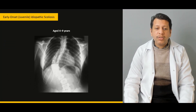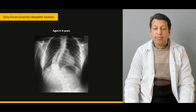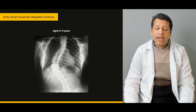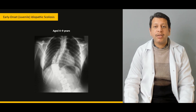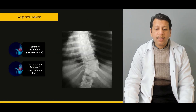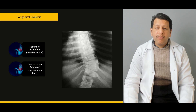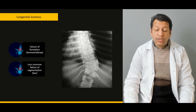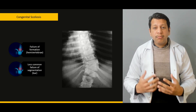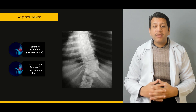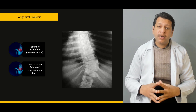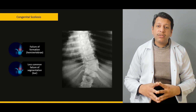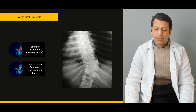We will be specially discussing early onset and juvenile idiopathic scoliosis, and what are the indications to go for some form of bracing or surgery. We will also briefly discuss congenital scoliosis and the different types of congenital malformations which can happen in the vertebra and can eventually lead to an aggressive form of scoliosis.